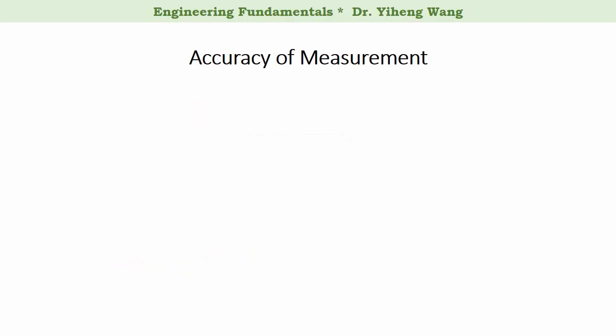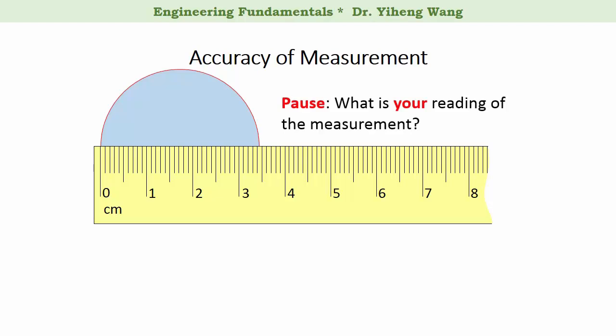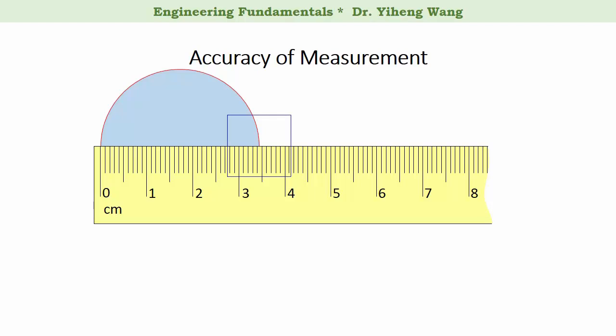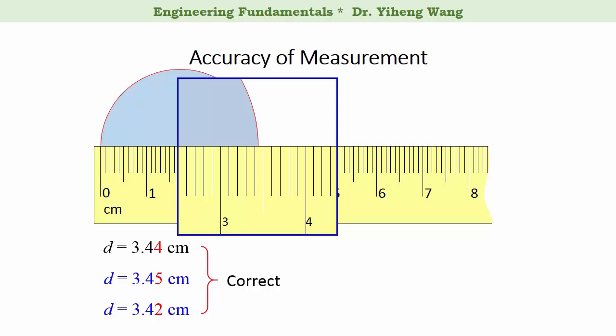Let's look at an example. Imagine we need to measure the diameter of this circle using this ruler. Let's zoom in on this region. It seems that the diameter of this circle is a little bit more than 3.4 cm. We can read the measurement of 3.4 cm with confidence, but for the last digit we must guess. I can guess the last digit is 4, giving a reading of 3.44 cm. But when someone else takes a measurement of this same circle, he could give a reading of 3.45 cm, and another person could even give a measurement of 3.42 cm. All these measurements can be considered correct, but also none of them is the true value.